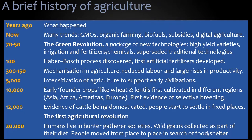Now, we have many trends in our agricultural systems. There are genetically modified crops, organic farming, the use of crops to produce biofuels. Some farmers are subsidized by government and others are not. And there's the revolution in digital agriculture to bring information technology into agricultural systems.